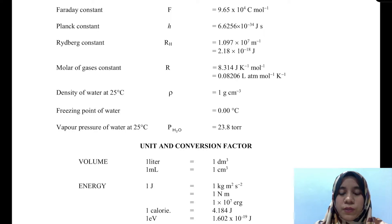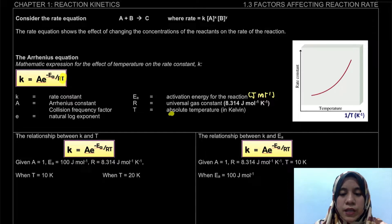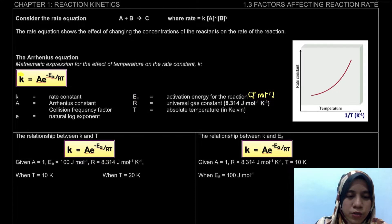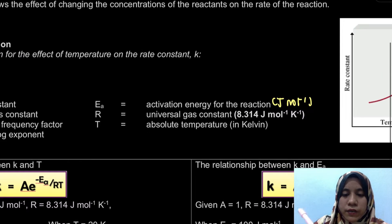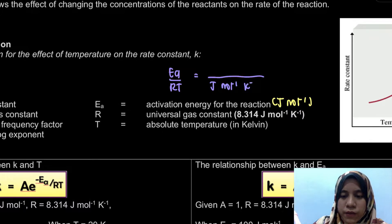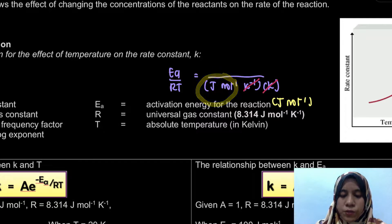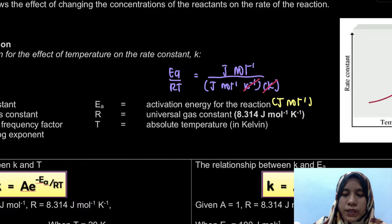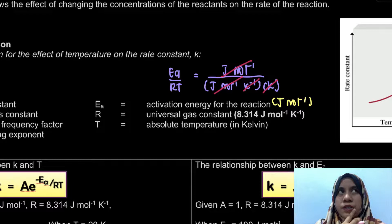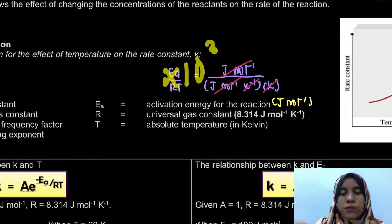Previously in semester one we used R as 0.0806, but for this chapter R is 8.314 joule per Kelvin per mole. Temperature T must be the absolute temperature in Kelvin. The reason Ea must be in joule per mole is because the exponent term Ea over RT must be unitless. R is in joule per mole per Kelvin, and T is in Kelvin, so those cancel. Therefore Ea must be in joule per mole to cancel out as well. If the question gives kilojoule, multiply by 1,000 to convert.